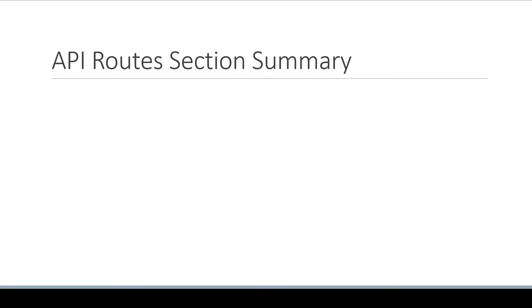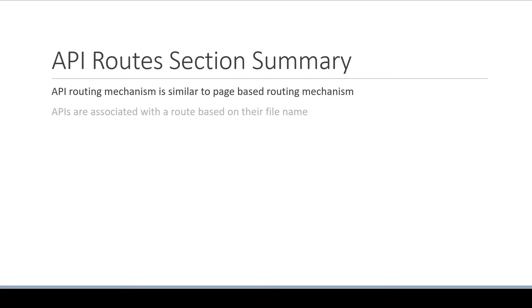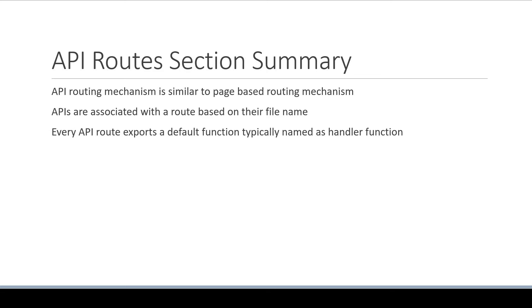In this video, I want to quickly summarize what we've learned about the API routes feature in Next.js. We started off by understanding that the API routing mechanism is similar to the page-based routing mechanism. We learned that APIs are associated with a route based on their file name. Every API route exports a default function, typically named as a handler function. The handler function receives the request and response as parameters.